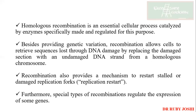When homologous recombination occurs, different enzymes or different proteins are involved. For example, the Holliday junction, which is formed in the case of prokaryotes, has different recombination pathways with different proteins. There is one pathway called the SDSA pathway, which is similar to Holliday junction recombination, but it is used for the repair of the DNA. And those are what we need to discuss in the upcoming sections. Besides providing genetic diversity, recombination allows cells to retrieve sequences which will be needed.